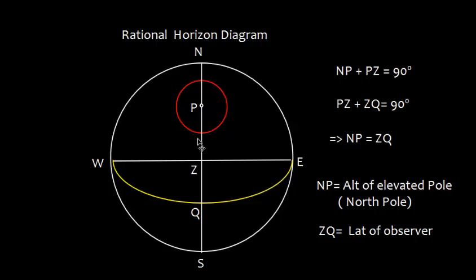Let me explain few things. From N to Z is 90 degree. So, NP plus PZ is equal to 90 degree. Similarly, from equinoctial, that is point Q to P is 90 degree, which can be written as PZ plus ZQ. If we equate both the equation, the PZ get cancelled. So, NP is equal to ZQ.